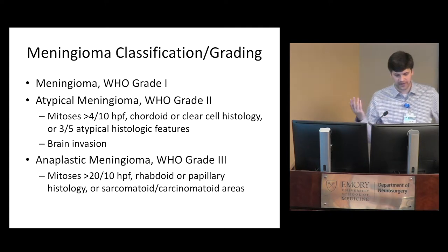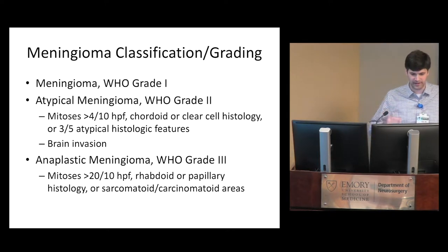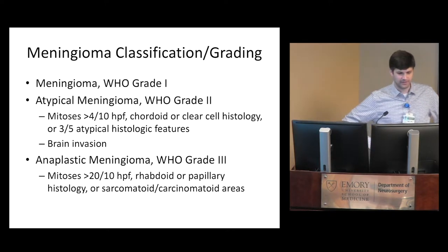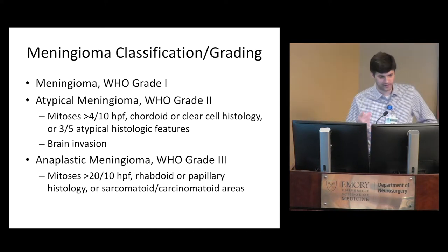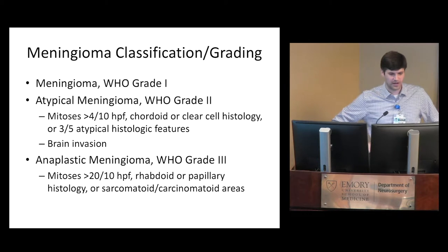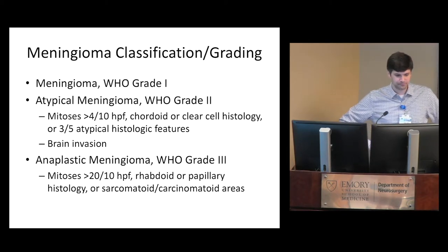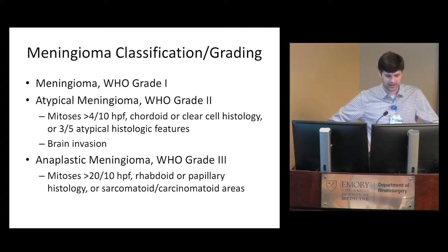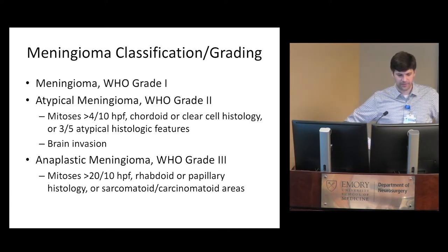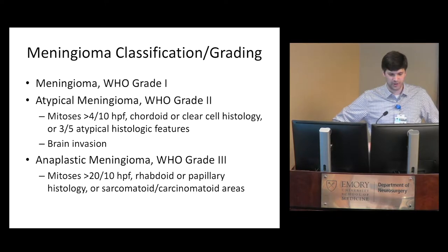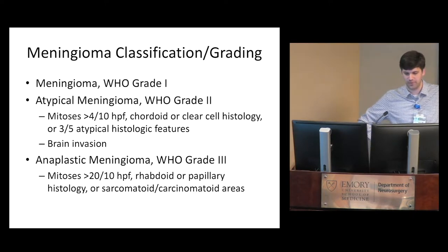Brain invasion counts to make a meningioma grade 2. Invasion of soft tissue doesn't count — only the brain. Brain is king. Grade 3 meningiomas are anaplastic meningiomas, with a much higher mitotic count. Rhabdoid or papillary histology also makes grade 3, as do areas of the meningioma that no longer look like a meningioma — sarcomatoid or carcinomatoid areas where a pathologist can't even tell it's a meningioma.